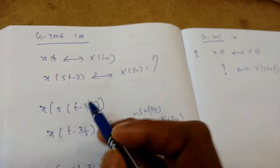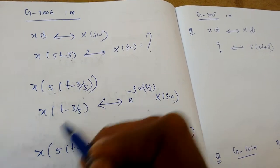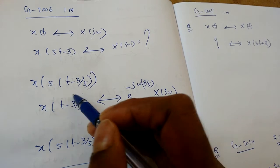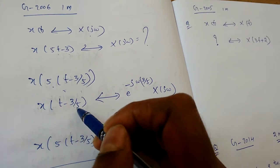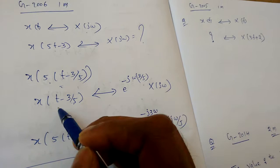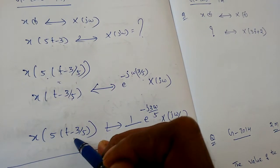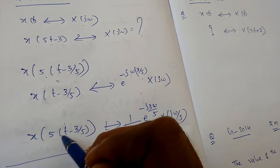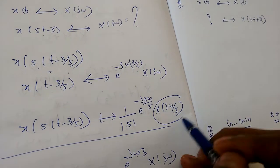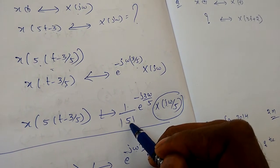The second method: take 5 common, so x(5(t − 3/5)). First apply shifting by 3/5, giving e^(−jω·(3/5)). Then apply scaling — only the ω term changes, giving (1/5)·X(jω/5). Both methods yield the same answer.